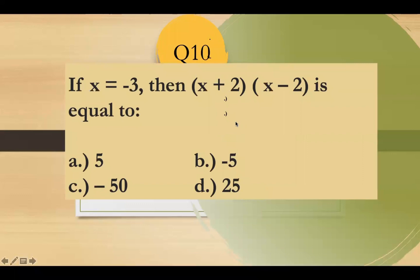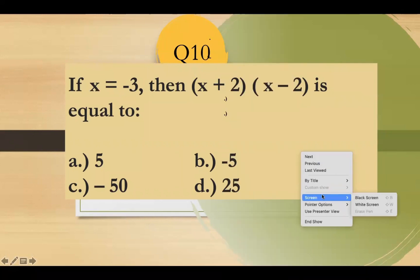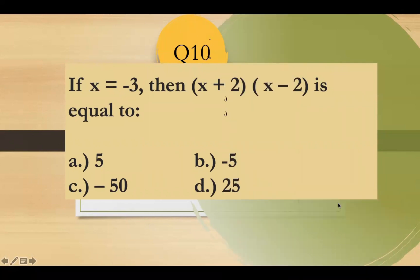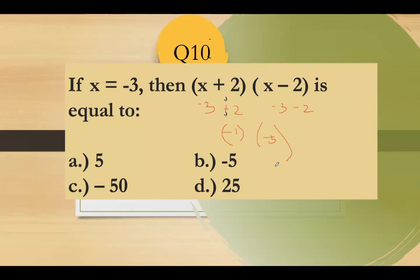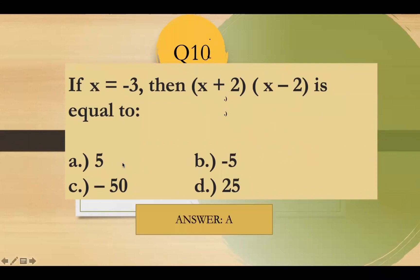Question number 10: if x is negative 3, then (x plus 2)(x minus 2) equals — substitute negative 3 for x. So (negative 3 plus 2)(negative 3 minus 2) equals (negative 1)(negative 5), which is positive 5. Letter A.